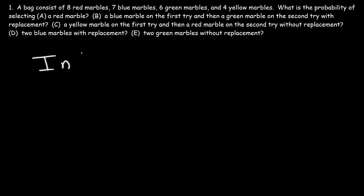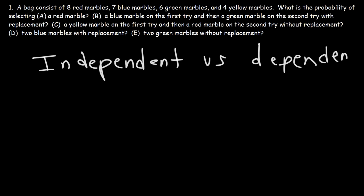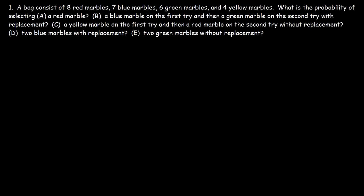In this video, we're going to talk about two types of events: independent events and dependent events. You might be wondering what the difference is between the two. As the name suggests, independent events are events that do not depend on each other, while dependent events are events that do depend on each other. We're going to use an example to illustrate this concept.